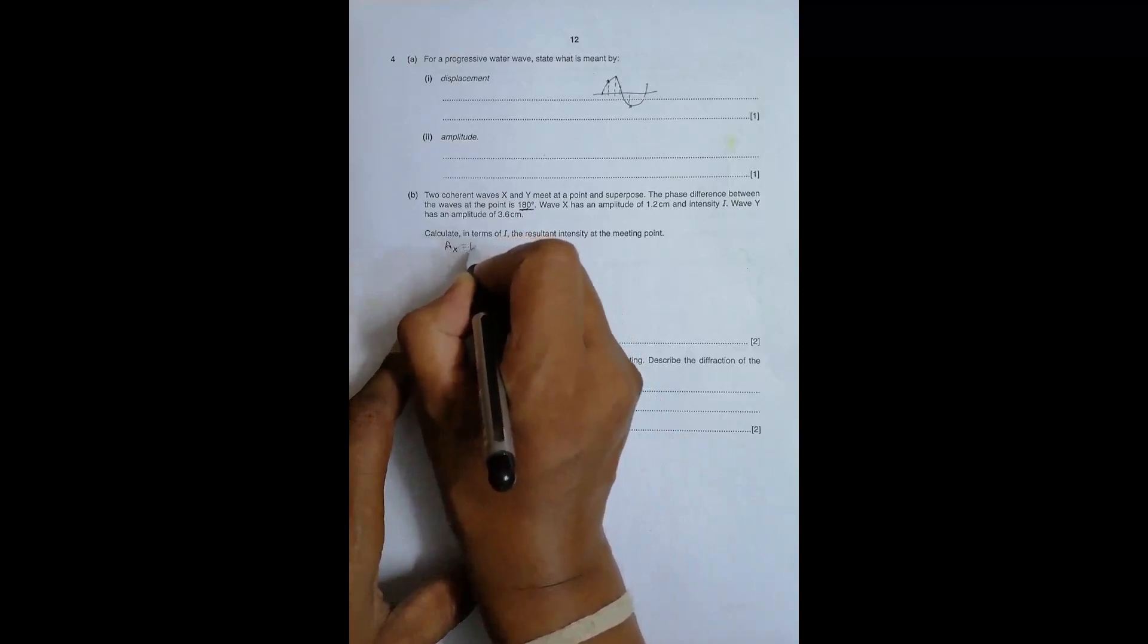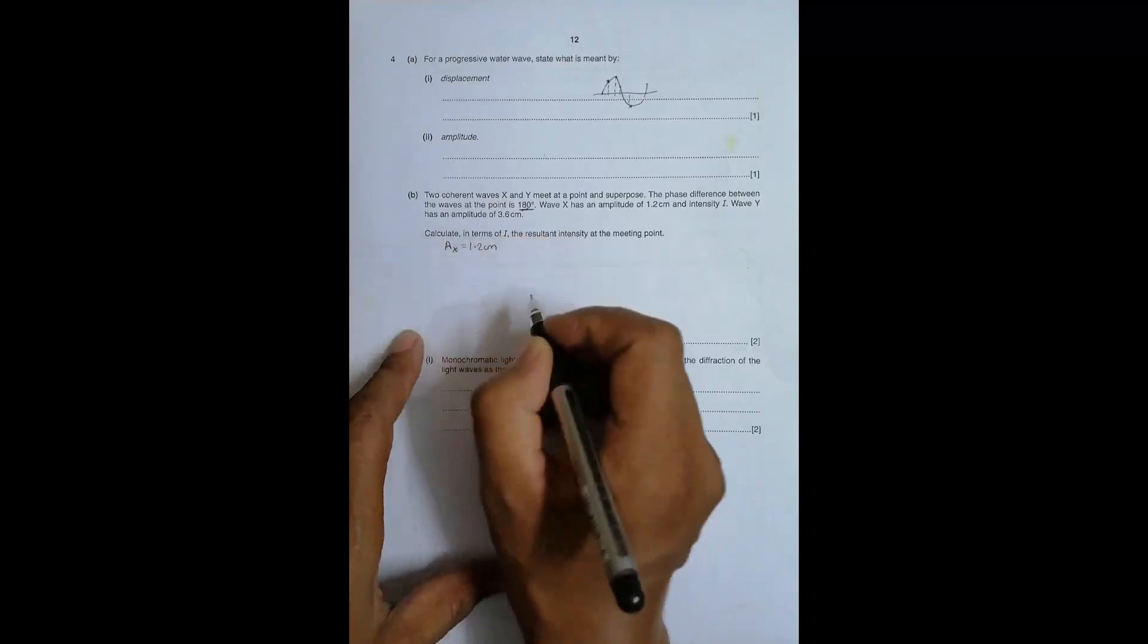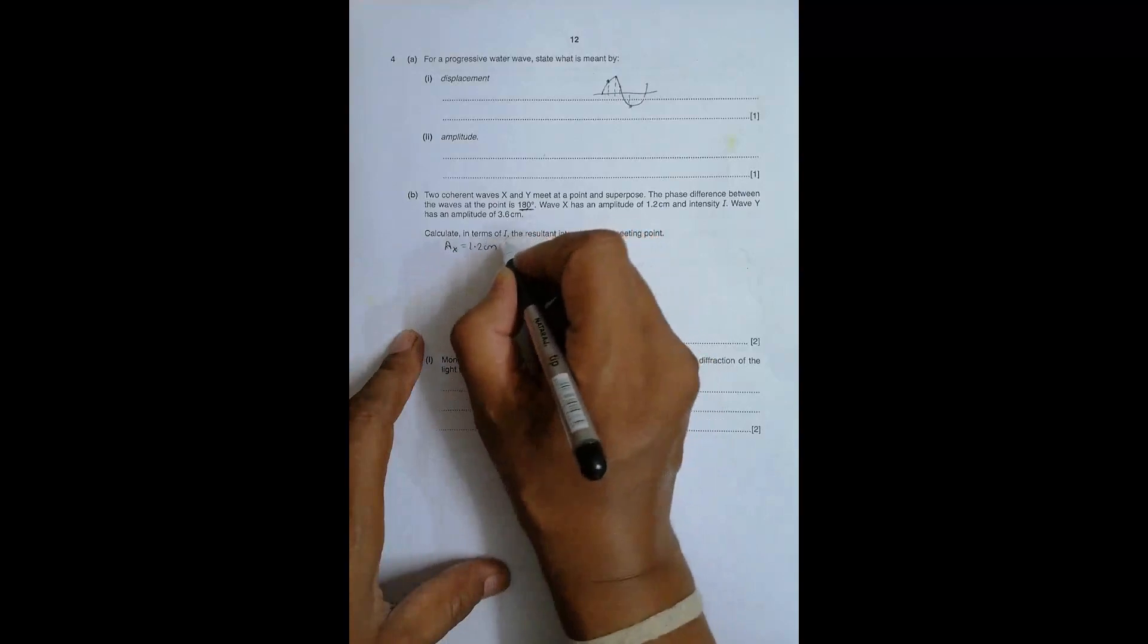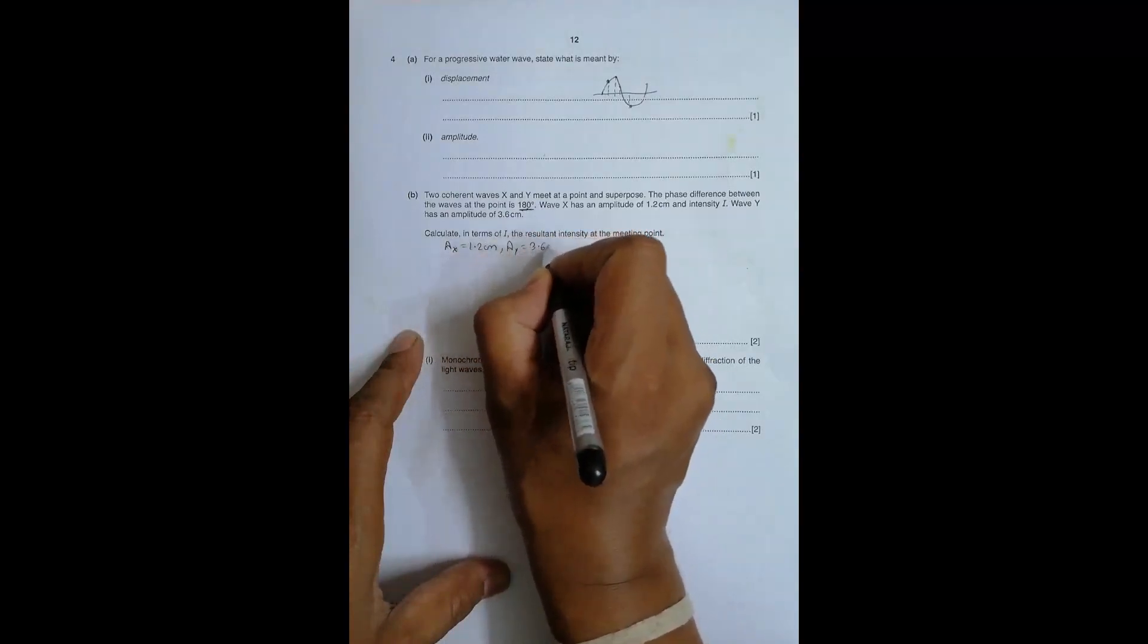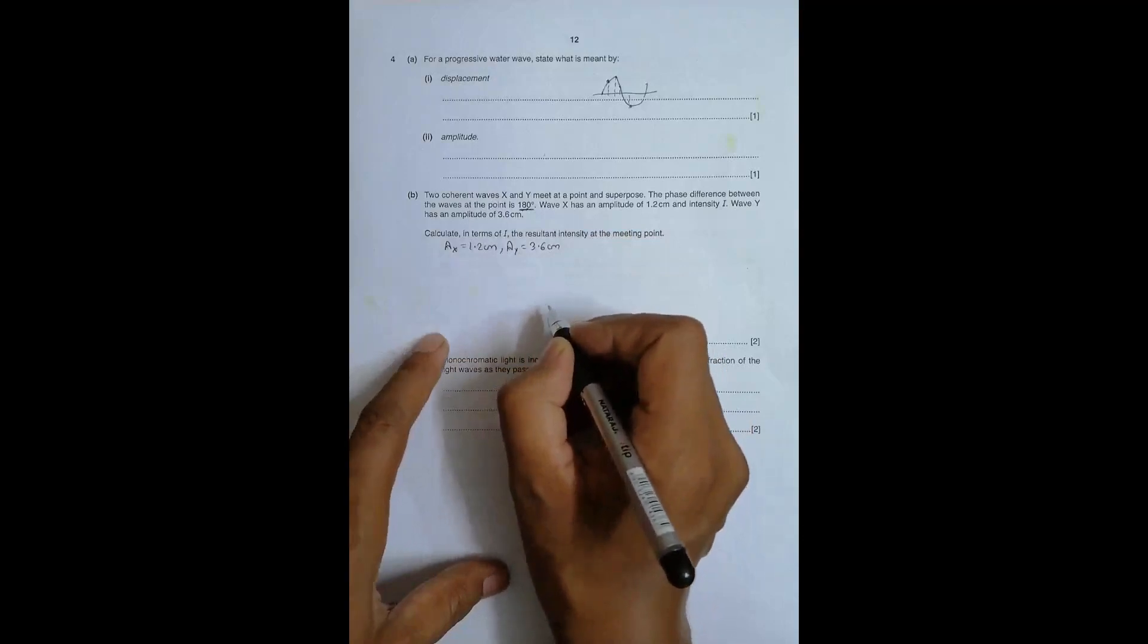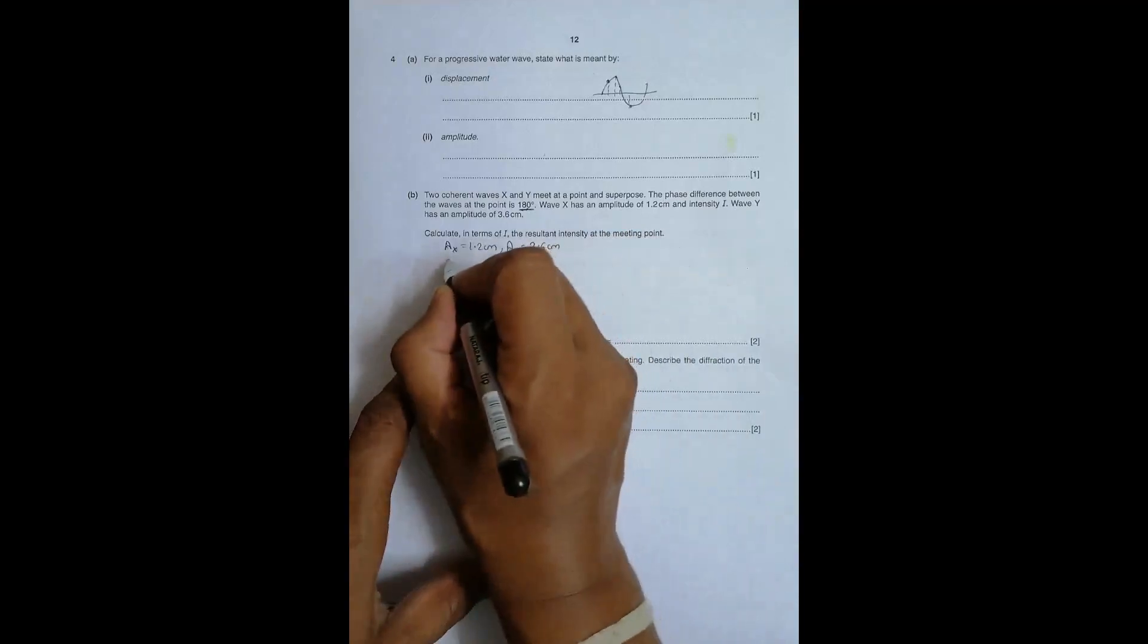Wave X has an amplitude of 1.2 centimeters, so Ax equals 1.2 centimeters. Wave Y has an amplitude of 3.6 centimeters, so Ay equals 3.6 centimeters, and the intensity of this is I.